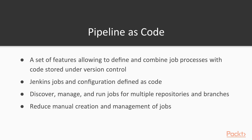The job is managed and executed in the same way except for the code upon which it is based. For example, you may want to have a CI pipeline that automatically builds the code for each branch committed to Git. This allows you to reduce manual creation and management of multiple Jenkins jobs. Just imagine how many jobs you would need to create if you were to run a job for each branch created by developers.